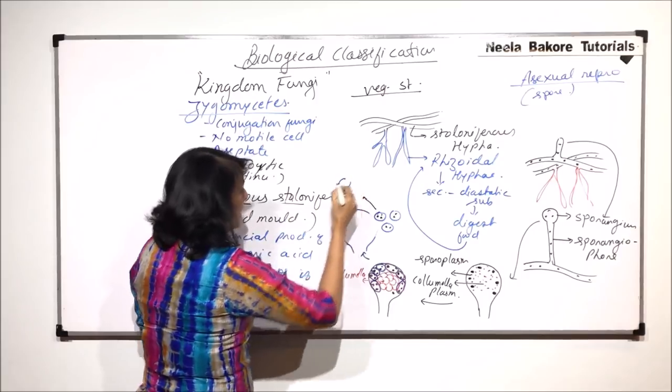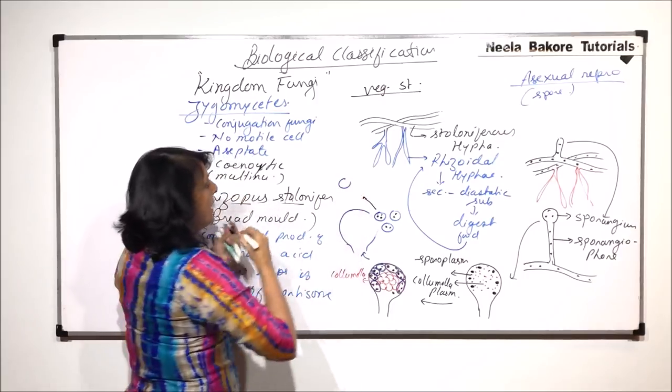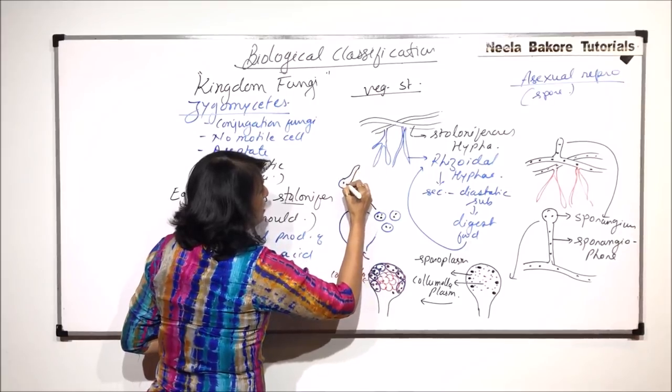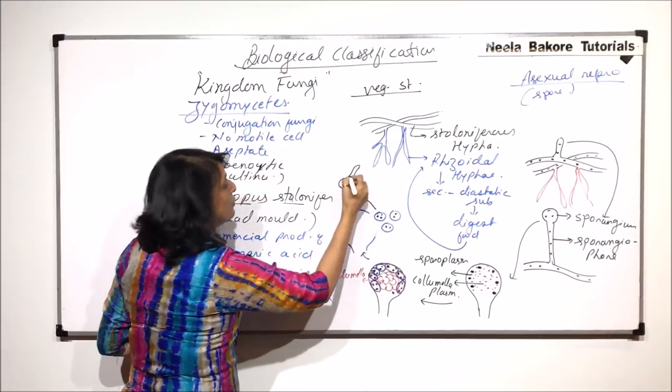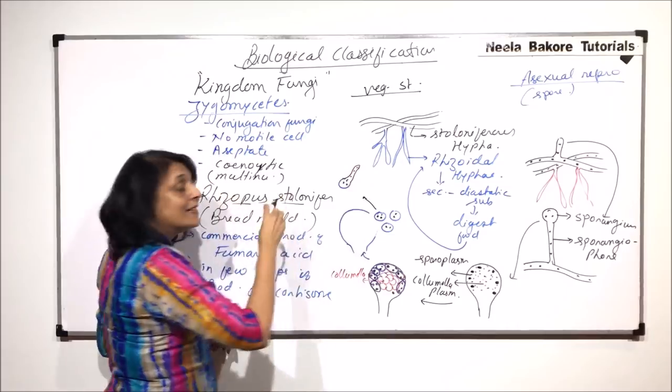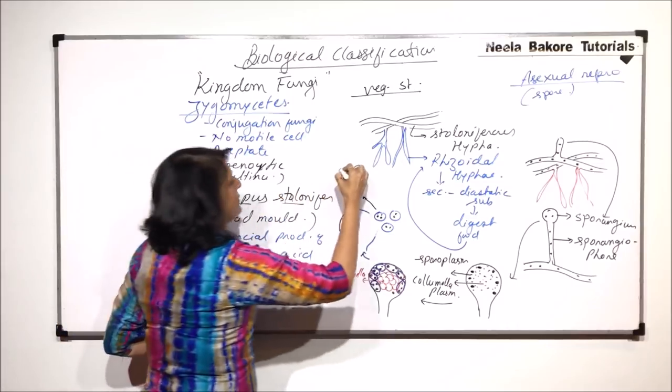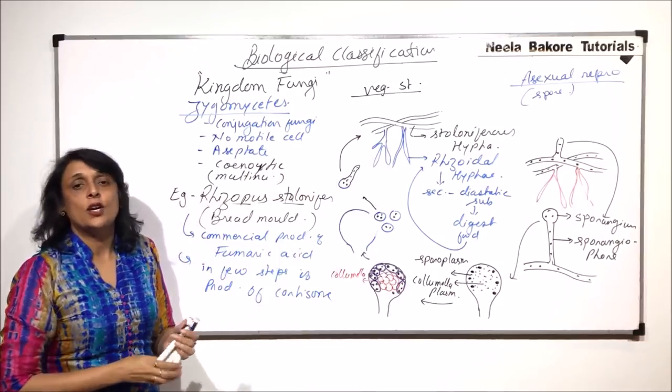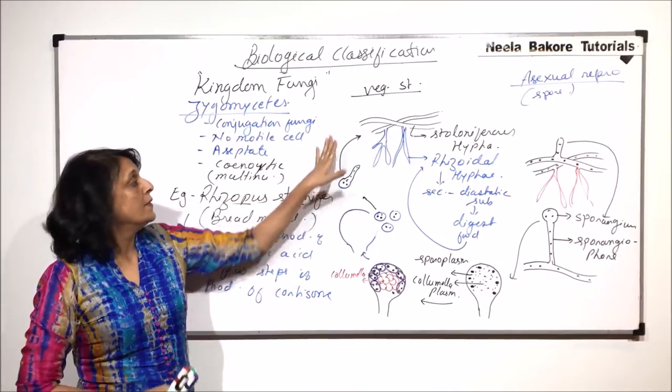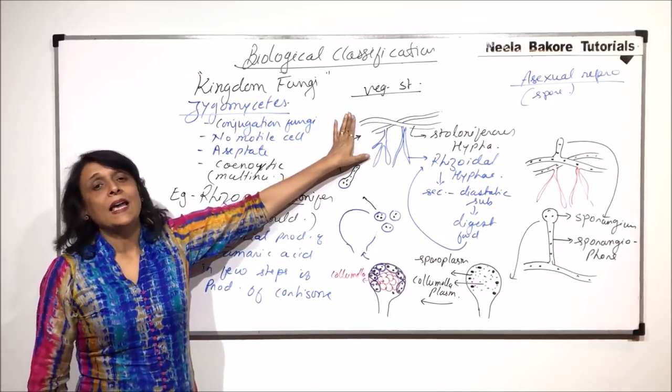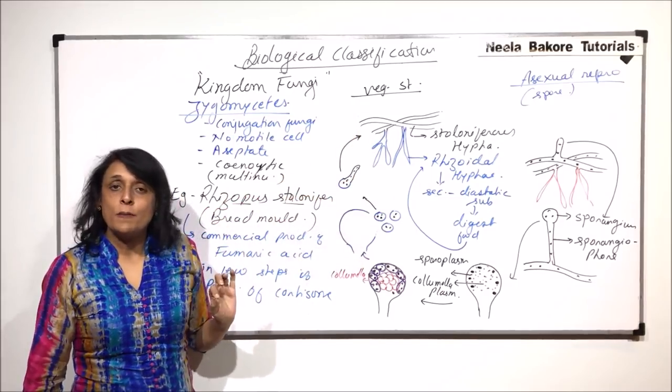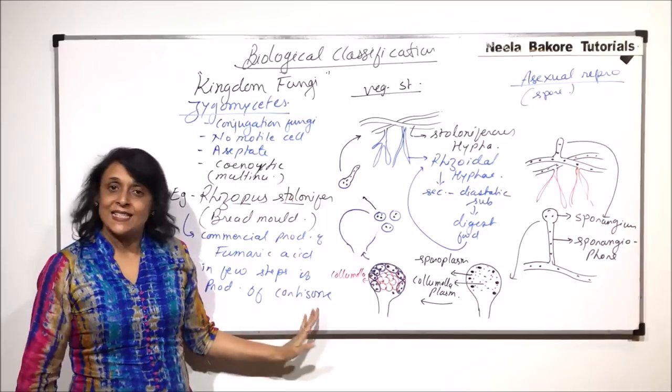This spore is going to germinate. The hypha is produced. There were initially three nuclei. These nuclei will divide and this hypha will grow and this is how we get the vegetative structure or hypha of the body. Again, the vegetative part is formed. Here, there is no gamete formation. That is why this is asexual reproduction.